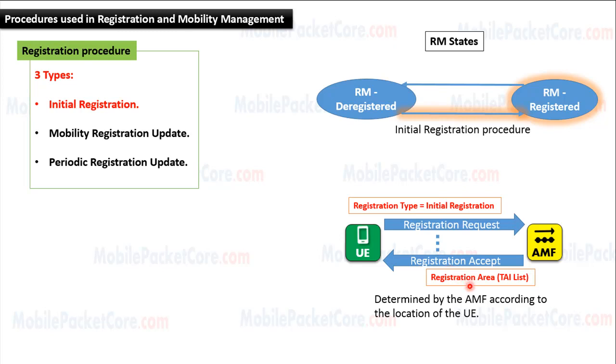The registration accept message includes the registration area of the UE, which is a tracking area list that is determined by the AMF according to the location of the UE.